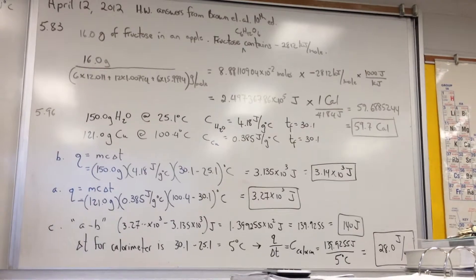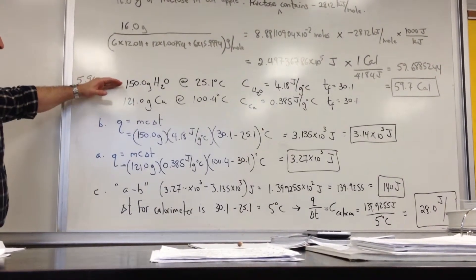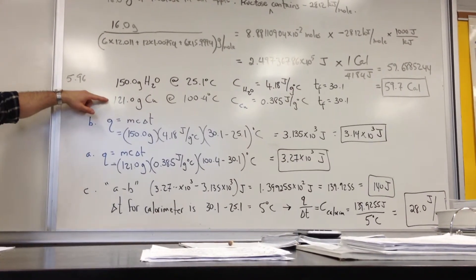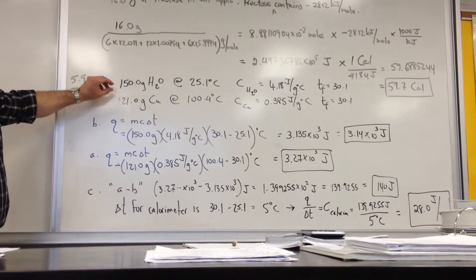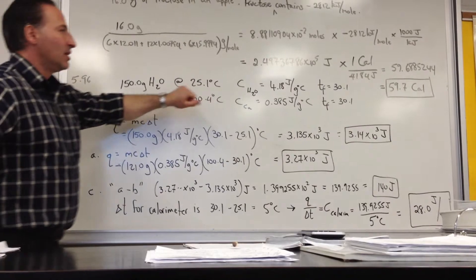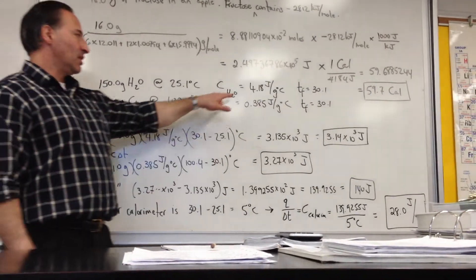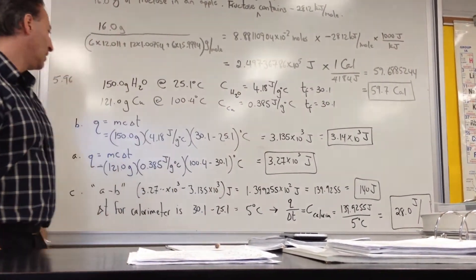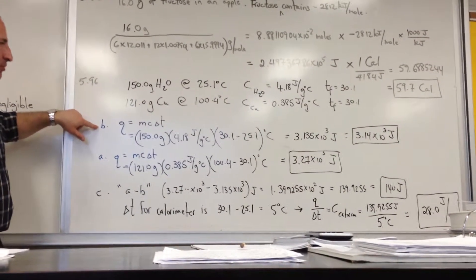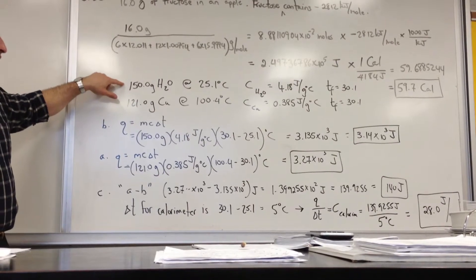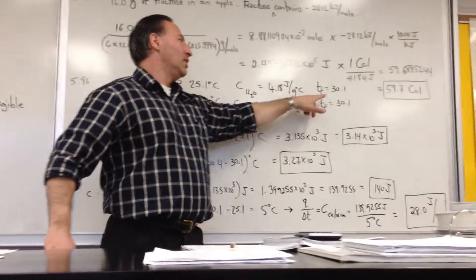Second question. We're told that two things are mixed in a calorimeter: 150 grams of water at 25 degrees Celsius is mixed with 121 grams of copper at 104 degrees Celsius. When the system equilibrates, it reaches a final temperature of 30.1 degrees Celsius. They also provide the specific heat capacities of the two substances. In the first part of the question, we're asked to find how much heat is gained by the water as it warms up from 25.1 to 30.1 degrees Celsius.